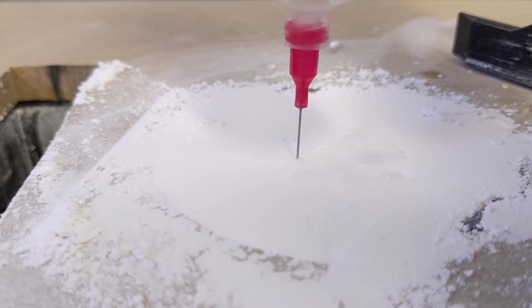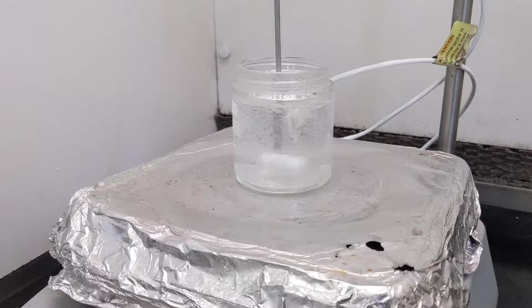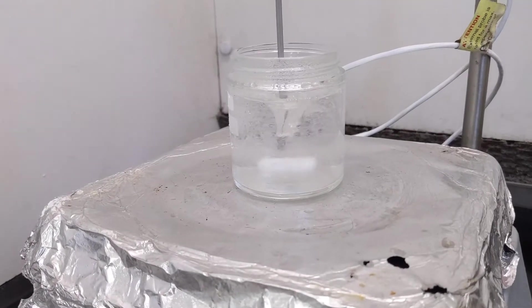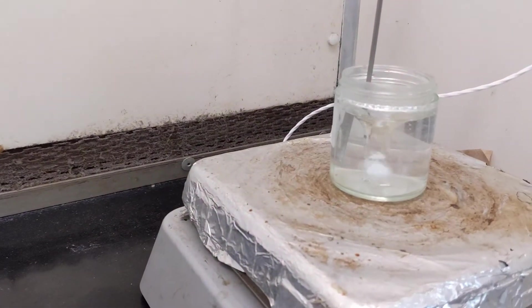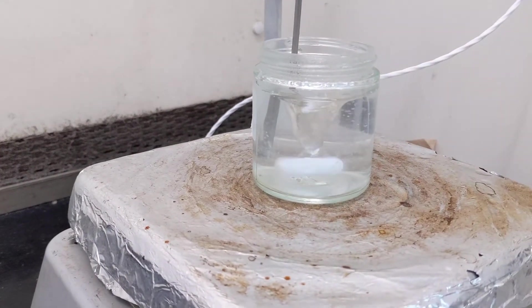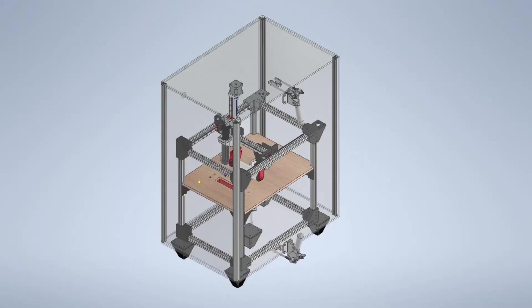The powder and binder selected to create our thermochemical adsorption system are magnesium sulfate, MgSO4, and PVA polyvinyl alcohol. The PVA was created using concentrated PVA powder and distilled water as shown here. This allowed for the production and use of different percent PVAs.